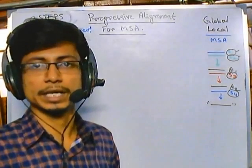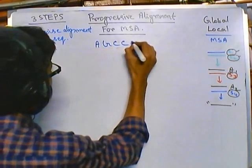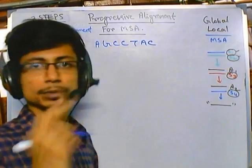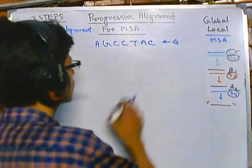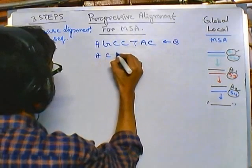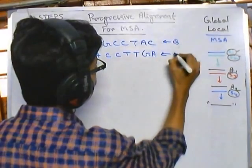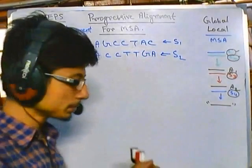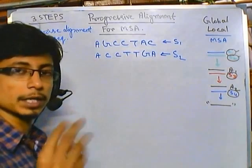So what is pairwise alignment? Suppose we are having this sequence: A, G, C, C, C, T, A, C — this is sequence one. In any kind of sequence alignment there are two sequences: one is the query sequence, the sequence of our interest, and another is the database sequence. So suppose we are having another sequence: A, C, C, C, T, T, G, A — this is sequence two. Pairwise alignment simply relies on a scoring rule: we score the alignment using global or local alignment by looking for match, mismatch, and gap.